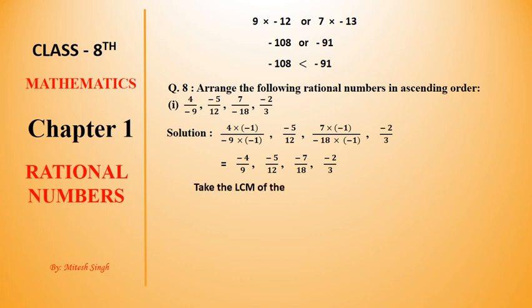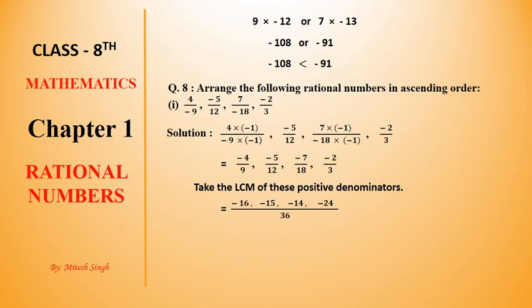Now we find the LCM of the positive denominators. The LCM is 36. We divide 36 by each denominator and multiply the result with the numerator: 36÷9=4, 4×(−4)=−16; 36÷12=3, 3×(−5)=−15; 36÷18=2, 2×(−7)=−14; 36÷3=12, 12×(−2)=−24. Note down all the numbers separately.